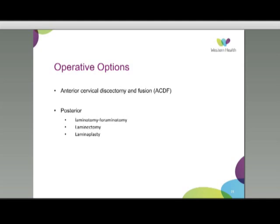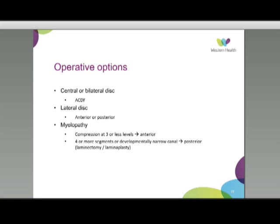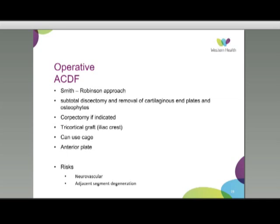Operative options include anterior approaches — cervical discectomy and fusion — and posterior techniques including laminotomy or foraminotomy, laminectomy, or laminoplasty. The choice depends on the morphology of the problem. A predominantly central or bilateral disc protrusion is best treated anteriorly. A lateral disc can be treated either anteriorly or posteriorly. For myelopathy, the number of levels involved matters: three or fewer can be effectively treated anteriorly, but more than three segments or a developmentally narrow canal should be approached posteriorly.